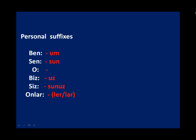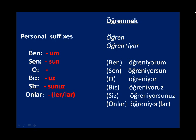Now let's conjugate the verb öğrenmek (to learn). First, you omit the infinitive and get the root: öğren. Since öğren ends in a consonant, we have no problem — we directly add the suffix. So: ben öğreniyorum (I am learning), sen öğreniyorsun (you are learning), o öğreniyor (he/she/it is learning), biz öğreniyoruz (we are learning), siz öğreniyorsunuz (you all are learning), and onlar öğreniyorlar (they are learning).